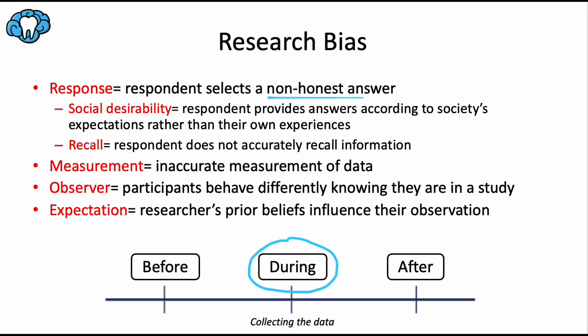Recall bias happens when participants are not able to accurately recall information, so they unknowingly provide a wrong answer. Observational studies that rely on self-reporting past events are particularly prone to this — in other words, retrospective studies that look into the past are particularly prone to recall bias. I remember RE for retro and RE for recall. To reduce this type of bias, we shorten the recall period — for example, asking participants about their dietary habits in the past week rather than over the past year.